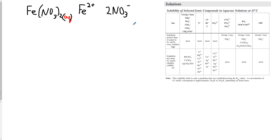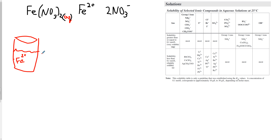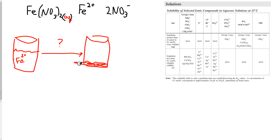Let's say we have a sample of water that has been polluted with Fe²⁺, and we want to add something so that the Fe²⁺ precipitates and sinks to the bottom. We need to hook it up with an ion — instead of nitrate — an ion that will make it insoluble.